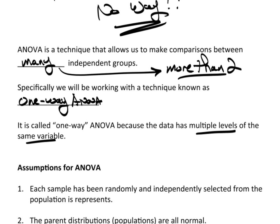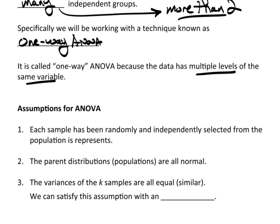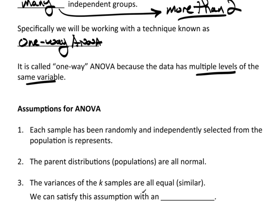Now, the assumptions for ANOVA - everything, every technique we have has assumptions. The first assumption is that each sample was randomly and independently selected from the population it represents. It's representative of the population is really what this is getting at, the population that each sample is representing. This is kind of a standard assumption that we always assume. If we don't think our data is somehow representative of the population we're trying to represent, then why are we doing an analysis? So this is kind of an assumption for everything that we do.